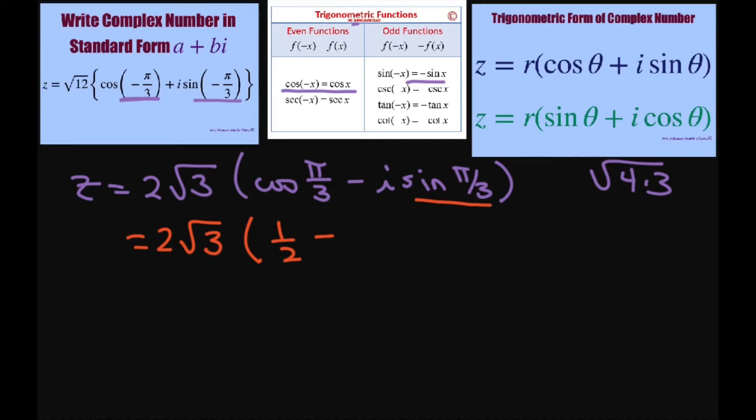Minus sine of 60 degrees, or pi divided by 3, is square root of 3 divided by 2i.